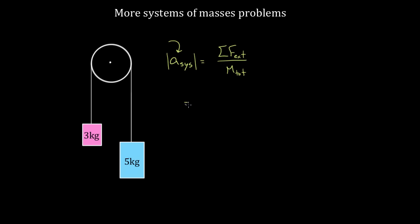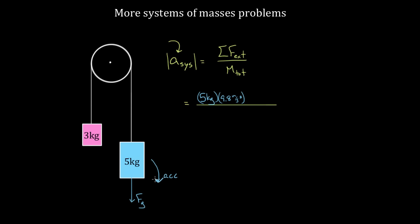So how do we solve this? We identify the external forces — forces exerted on objects in our system from objects outside the system. One external force is the force of gravity on the five kilogram mass, which equals five kilograms times 9.8 meters per second squared. Since the five kilogram mass is the one pulling the system and driving it forward, we make that a positive force.